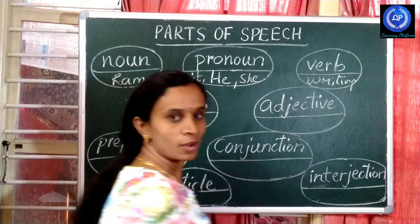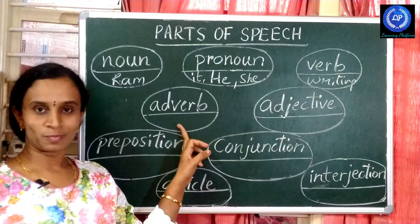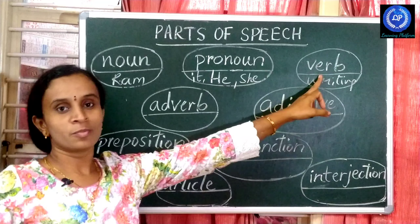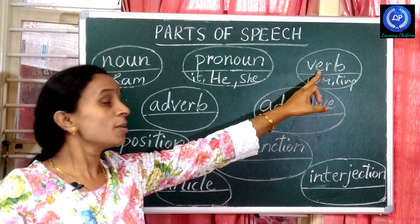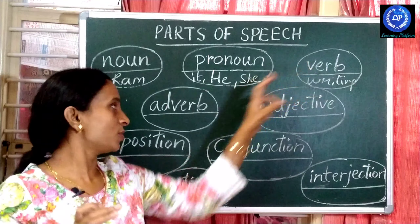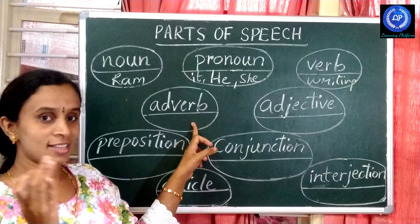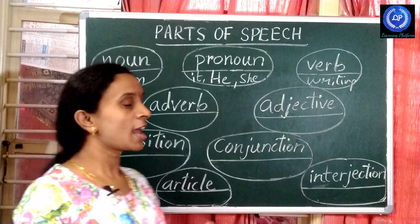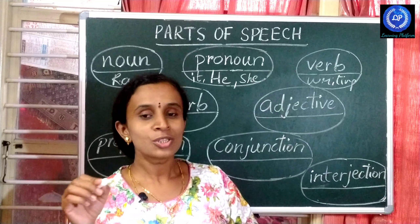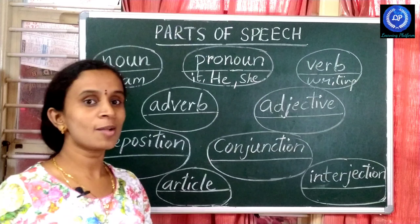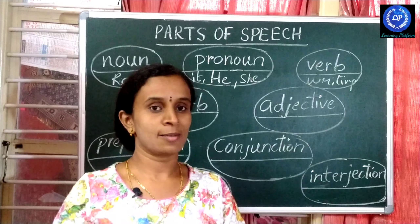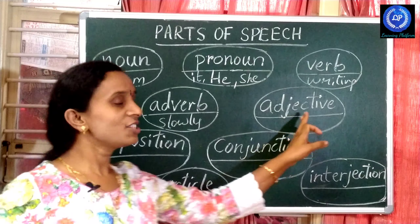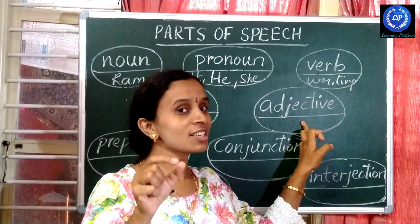Writing, eating — these are the verbs. Then adverb. An adverb is a word which modifies the verb. For example: I am writing slowly. I am running fast. Like this — slowly, fastly. These are adverbs.